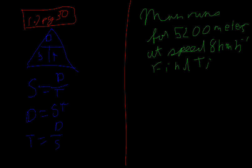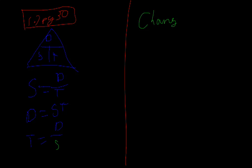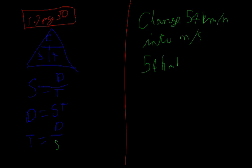Like change 54 km/h into meters per second. So what we first need to do, we know we need to convert to meters. So 54 km/h negative 1 is equal to...